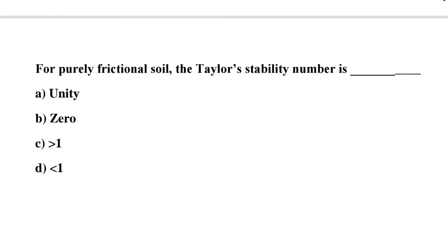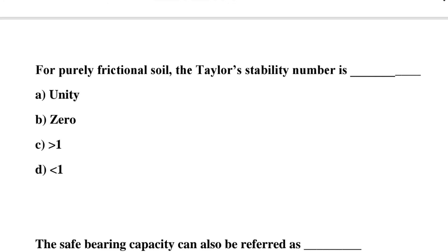Next question: for purely frictional soil, the Taylor stability number is — Option A: unity, Option B: 0, Option C: less than 1, Option D: greater than 1. The correct answer is Option B, 0.